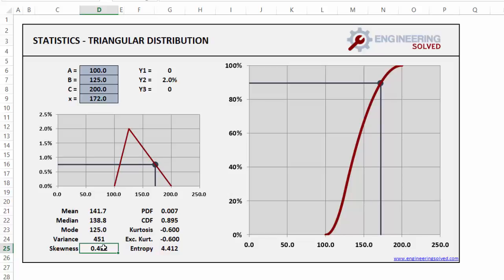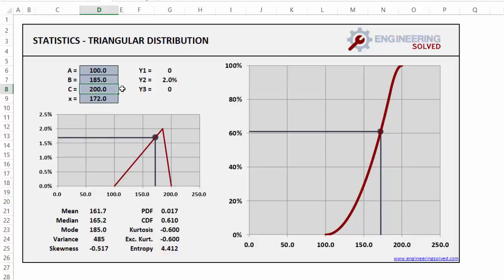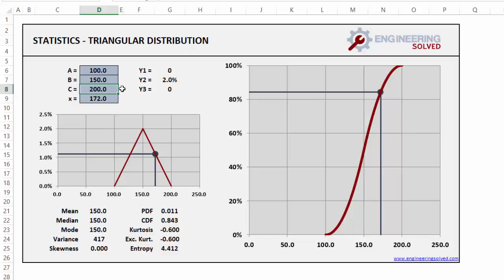Skewness. Here it's skewed to the right. If we were to increase this to, I don't know, 185, it would be negatively skewed to the left. And if we put this at 150, it's perfectly symmetrical. Your skewness is zero. That's kind of an interesting property.